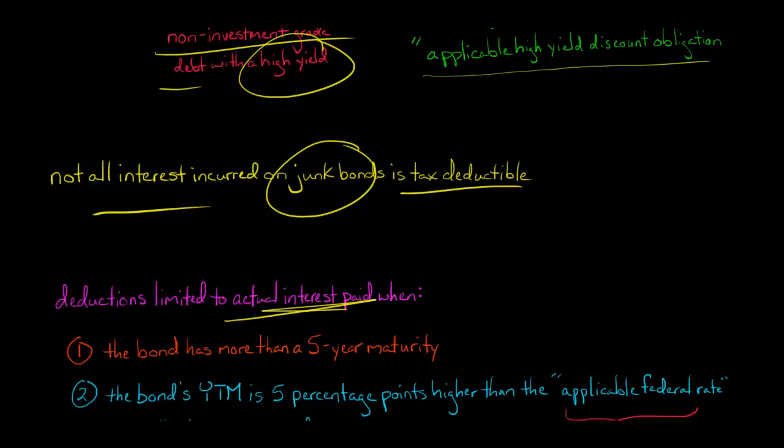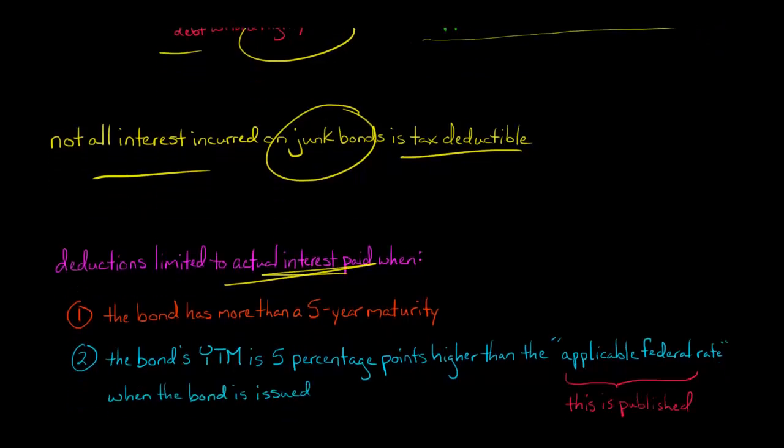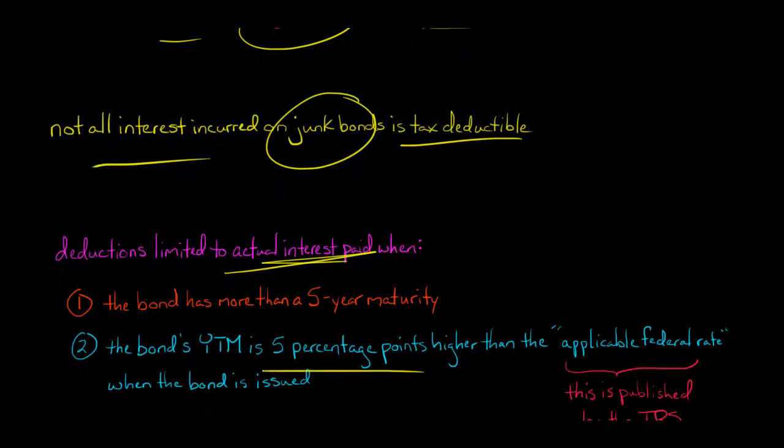If it's less than five-year maturity, you don't have to worry about the limitations. But if the bond has a maturity of more than five years, like a 10-year junk bond, and the yield to maturity on the bond is at least five percentage points higher than the applicable federal rate, this is our condition here.